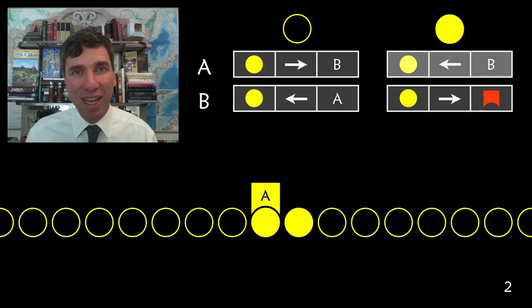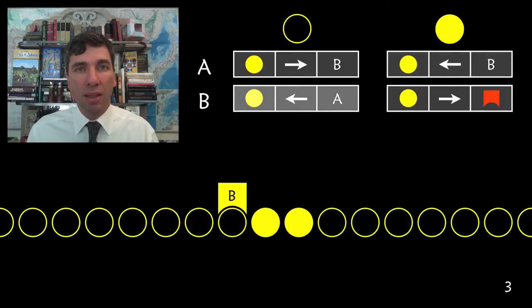Now we are in state A with a full circle. So we can see what we need to do there. We need to replace our full circle with another full circle, so we don't have to change that, and we move to the left and we replace our state with B. We keep on going.